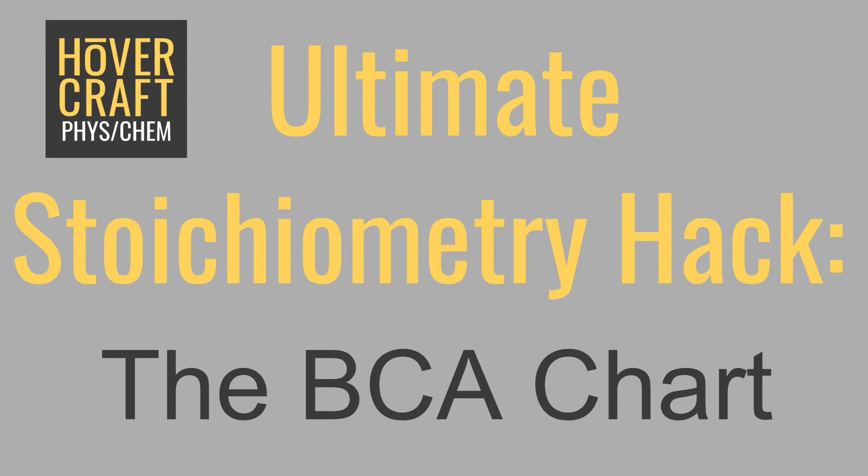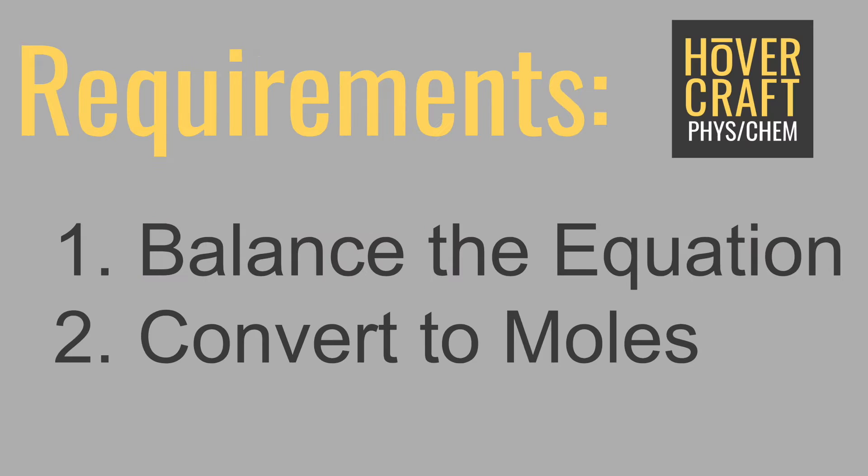BCA stands for before, change, and after. Luckily, all that you need to be able to do to use this method is balance the chemical equation that you're working with and convert all starting quantities to moles. If you don't know how to do those two things, those are a topic for another video. But if you can do those two basic chemistry skills, you should be able to get every stoichiometry problem correct using the BCA chart method.